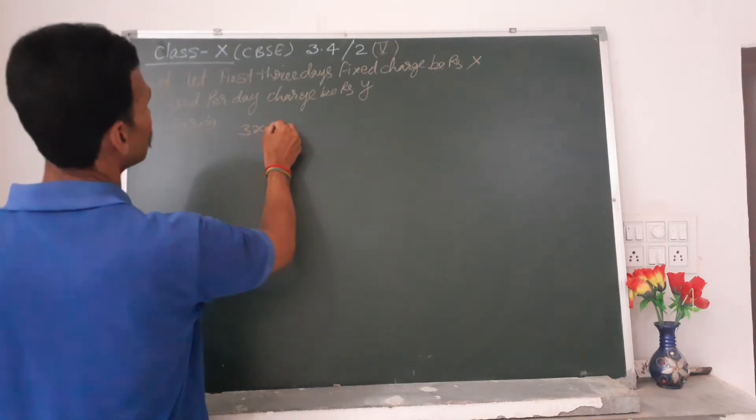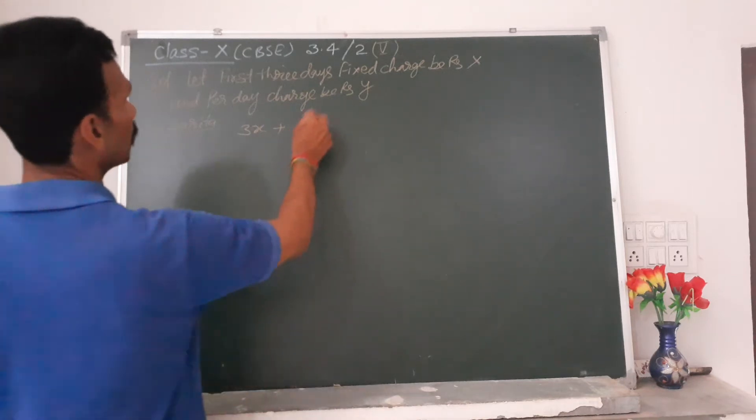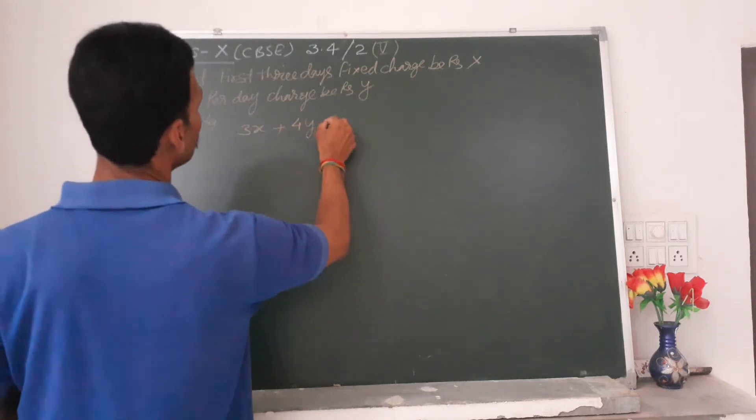So four into per day charge Y equals 27. This is equation number one.